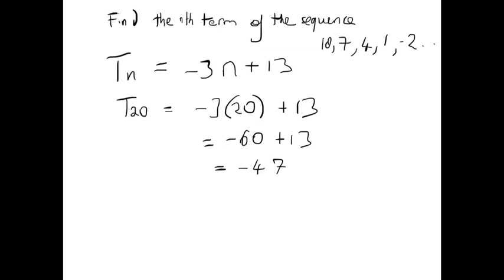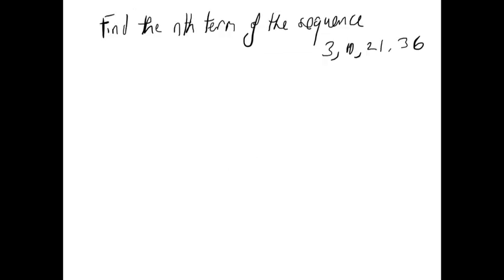Now that we've covered the nth term of a linear sequence, let's go ahead and find out how we get the nth term of a quadratic sequence. This is an example of a quadratic sequence. You can't really tell it straight away by looking at it. You have to first find out the first difference and then the second difference. If the second differences are the same constant, then it's a quadratic sequence.